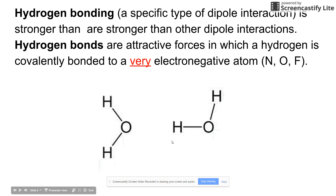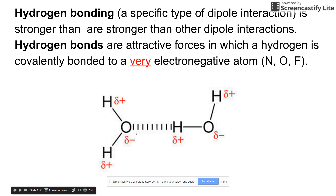The classic example is water — H2O molecules. This oxygen will attract the two electrons in this bond, giving it a partial negative, while these two electrons spend less time near the hydrogen, making it partial positive. The same thing happens with the other oxygen-hydrogen bond. Between the two molecules, you have a partial negative on the oxygen and a partial positive on the hydrogen attracted to each other. This hydrogen bonding is represented by this dashed line — the interaction between the partial negative on the oxygen and the partial positive on the hydrogen.